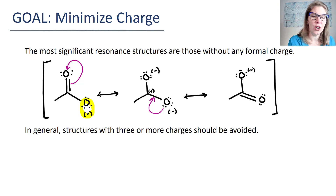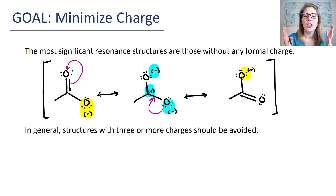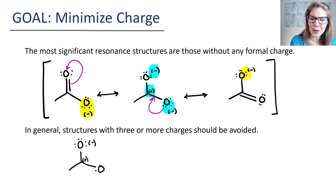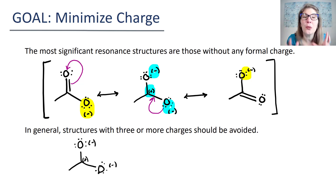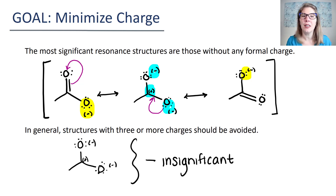If we look at this first structure, notice how we have an oxygen that's negative. On the second one, we have an oxygen that's negative, a carbon that's positive, and an oxygen that's negative. On the third structure, we have an oxygen that's negative. Two of these structures are significantly better than the other. That middle structure is insignificant because you have three atoms that are all adjacent to one another where you have three charges. So when we draw the resonance set, I'm actually not even going to include this one.